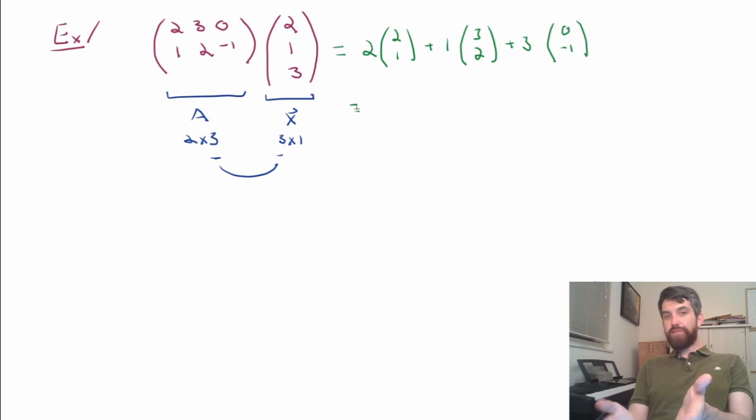And if I add up this vector equation, I can see I've got in the first components a 4, a 3, and a 0, that looks like a 7. And then in the bottom components, a 2 times 1 is 2, a 1 times 2 is another 2, so 4. And then I subtract off a 3, and that gives me a value of 1.